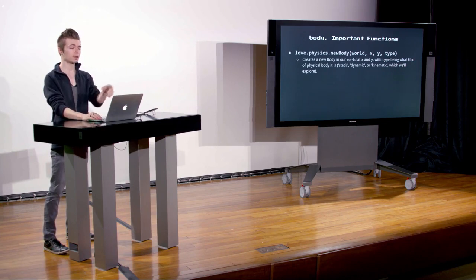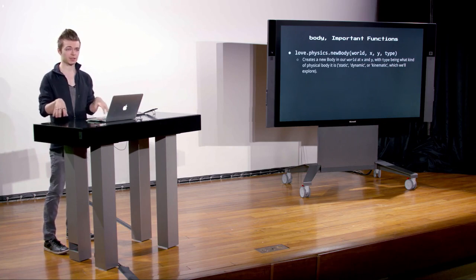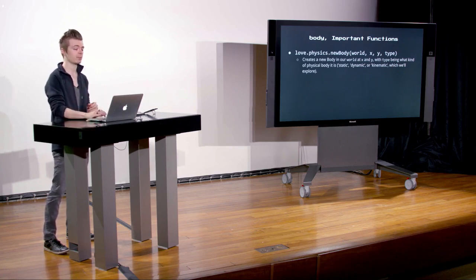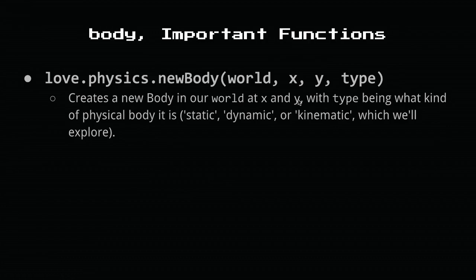The body also gets an x and a y, which places it in the world on instantiation. There are three fundamental body types in Love2D: static, dynamic, and kinematic. These influence how the body interacts with other objects in our scene. So we have the world, which encapsulates everything — all the bodies, all the fixtures — and then we have the bodies, which are the entities in our game world that have position and velocity.